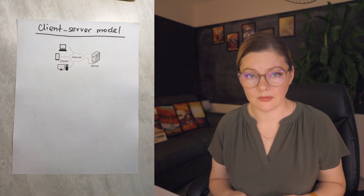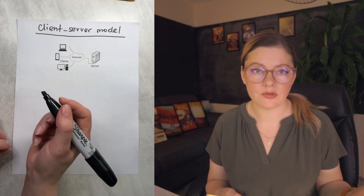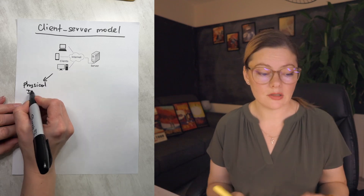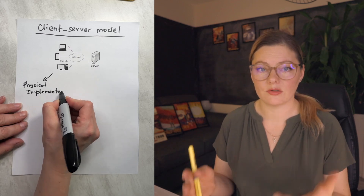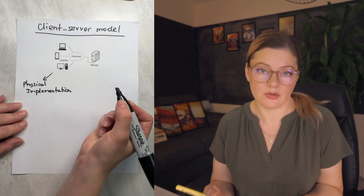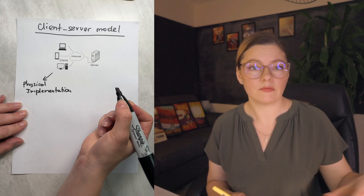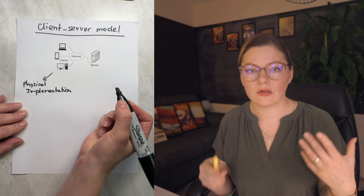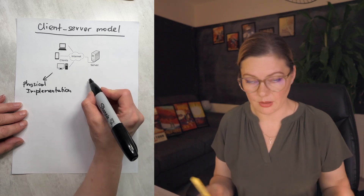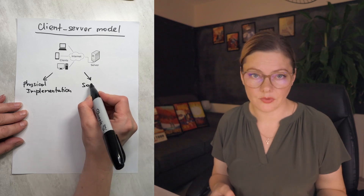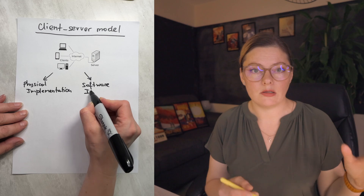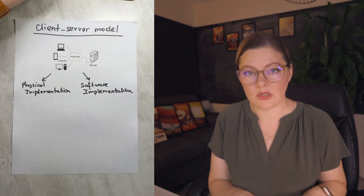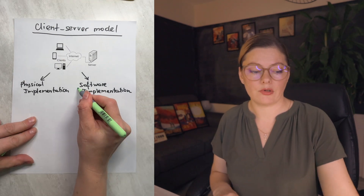It all starts with the client-server model. I took this picture from the Wikipedia page to help illustrate that idea. There are two types of how the client-server model can be implemented. One is where the server is located on a separate piece of hardware or a separate computer, and the clients are other devices connected to that server via the network. But clients and the server can also exist on the same system — I call this the software implementation of the client-server model, where the clients and the server are separate pieces of software on the same system.